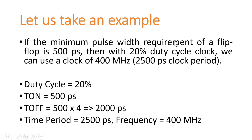In another example, the minimum pulse width requirement is still 500 ps, but the clock duty cycle is 20%. Here T-on is less than T-off, and minimum T-on is 500 ps. T-off is 4 times T-on, which equals 2000 ps. Time period equals T-on plus T-off = 500 + 2000 = 2500 ps. Frequency equals 1 divided by time period, giving a maximum operational frequency of 400 MHz.